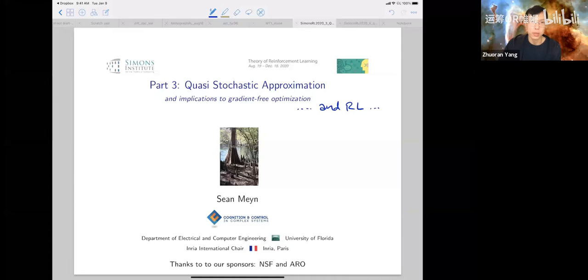His award-winning monograph with Richard Twitty, Markov Chains and Stochastic Stability, has been cited thousands of times in journals from a range of fields. The title of Professor Mein's talk today is Quasi Stochastic Approximation with Applications to Gradient Free Optimization and Reinforcement Learning. Please join me in welcoming him.